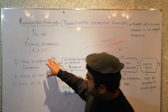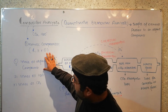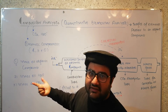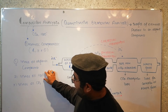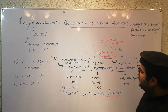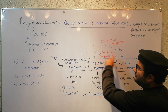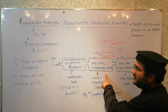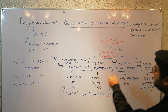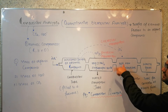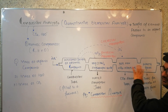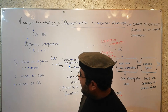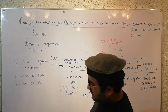Now we have three weights: the mass of the organic compound, which was measured when the sample was given to us; the mass of H2O, calculated from the difference in weight of the water absorption tube after and before combustion; and the mass of CO2, calculated from the weight of the CO2 absorption tube after minus before. After having these three masses, we will apply some formulas.